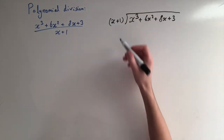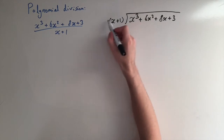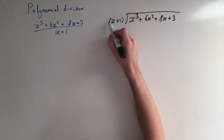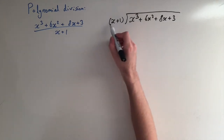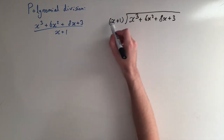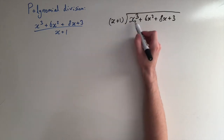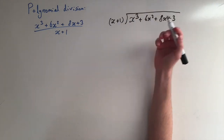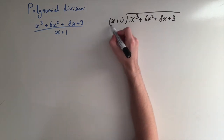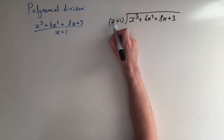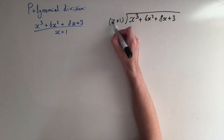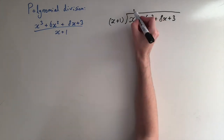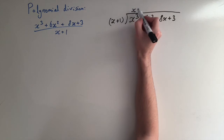In normal division we take this whole term and try to divide it into each term to see what we're left with. We can't divide x plus 1 into x cubed straight away, so what we do is look at the leading term. We divide x cubed by x and we're left with x squared.